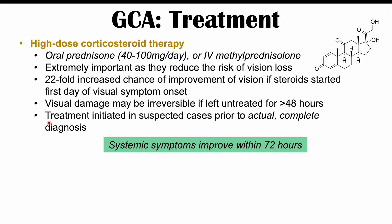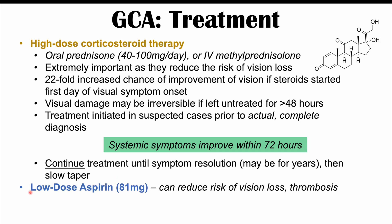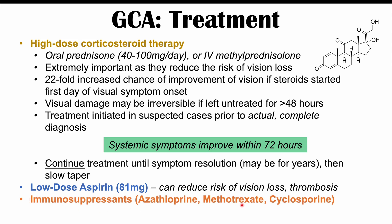Once high-dose corticosteroid therapy is started, systemic symptoms — such as fatigue and malaise — are the first to improve, often within 72 hours. Treatment continues until symptom resolution and may last many years, after which the dose is slowly tapered to allow the hypothalamic-pituitary-adrenal axis to recover. Low-dose aspirin at 81 milligrams can also be used in some patients, as there is evidence it reduces the risk of vision loss and thrombosis, though it is not a hallmark treatment.